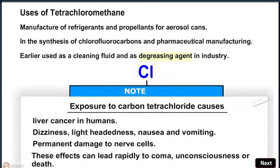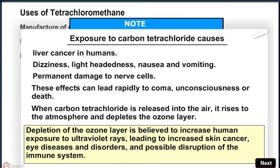Exposure to carbon tetrachloride causes liver cancer in humans, dizziness, lightheadedness, nausea, and vomiting. It also causes permanent damage to nerve cells. These effects can lead rapidly to coma, unconsciousness, or death. When carbon tetrachloride is released into the air, it rises to the atmosphere and depletes the ozone layer. Depletion of the ozone layer is believed to increase human exposure to ultraviolet rays, leading to increased skin cancer, eye diseases and disorders, and possible disruption of the immune system.